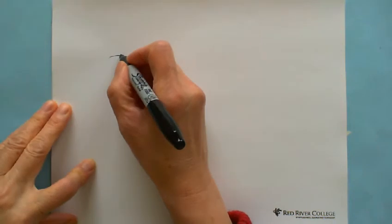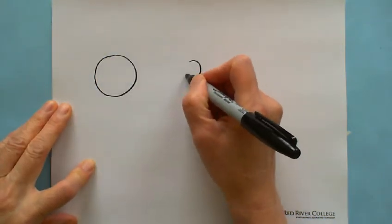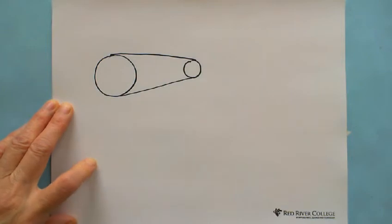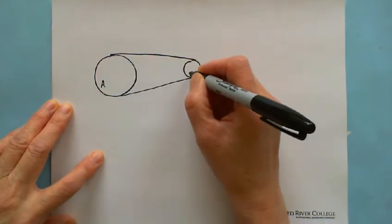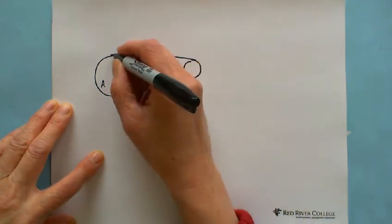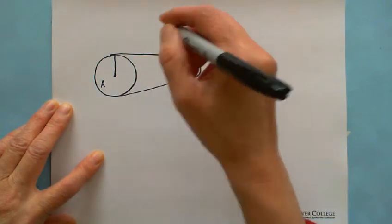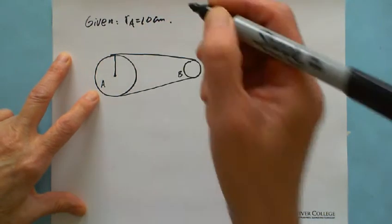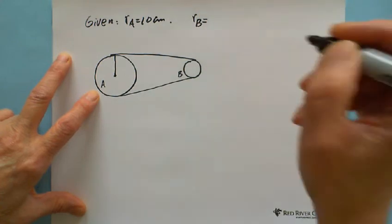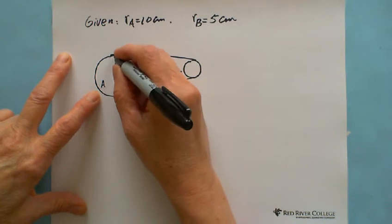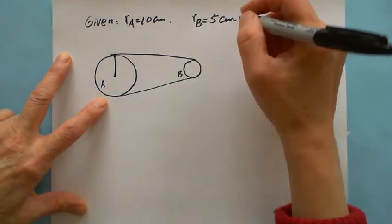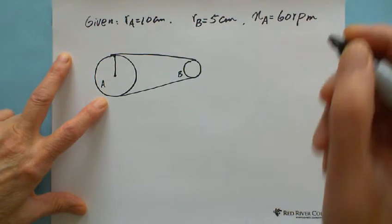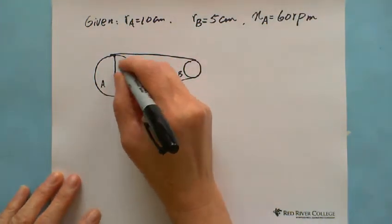For example, there is a pulley A connected with a belt, and this is pulley B. The radius of pulley A, RA, is 10 cm. RB is 5 cm. And the number of revolutions NA is given as 60 revolutions per minute.